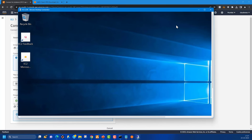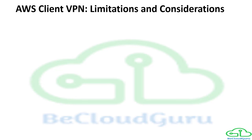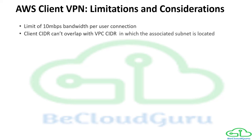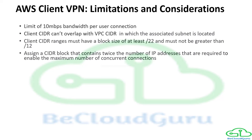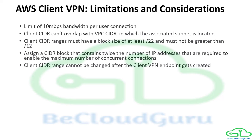Now let's discuss the limitations and considerations. First, there is a limit of 10 Mbps bandwidth per user connection. Your VPC CIDR and the client CIDR should be different and cannot overlap. The client CIDR range must have a block size of at least /22 and should not be greater than /12. You need to assign twice the IP range relative to the number of concurrent clients expected.